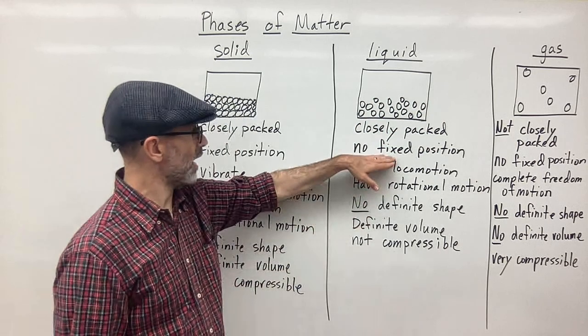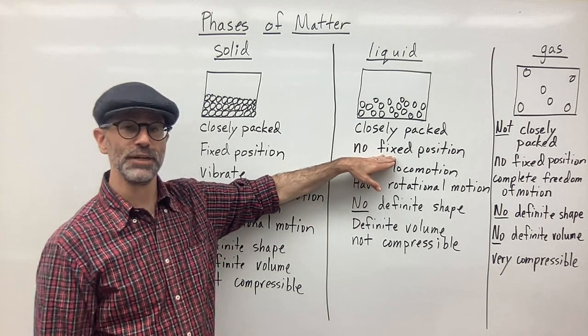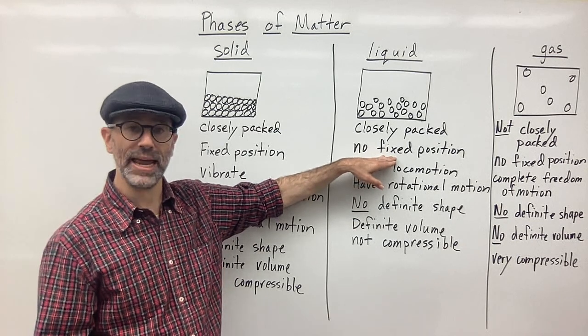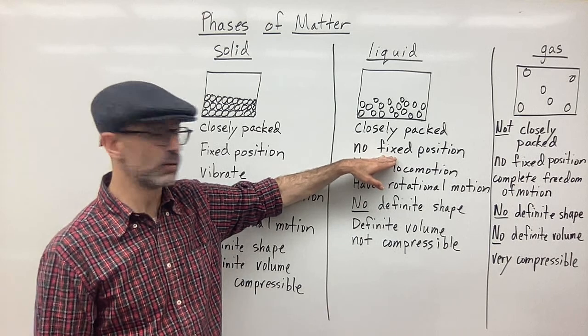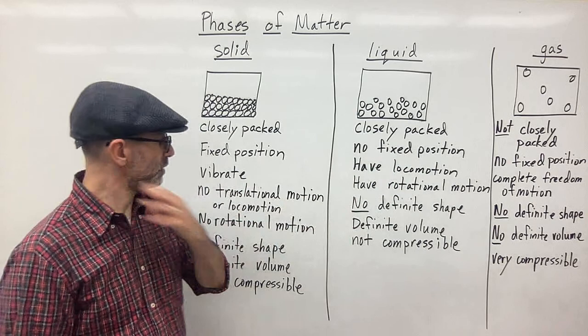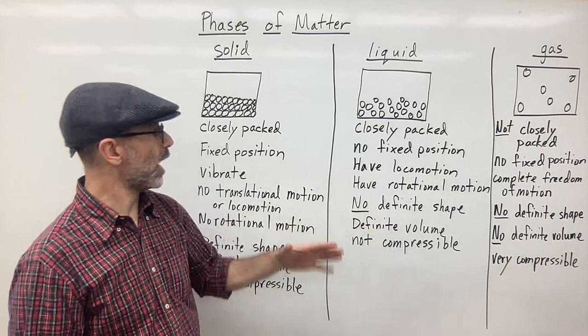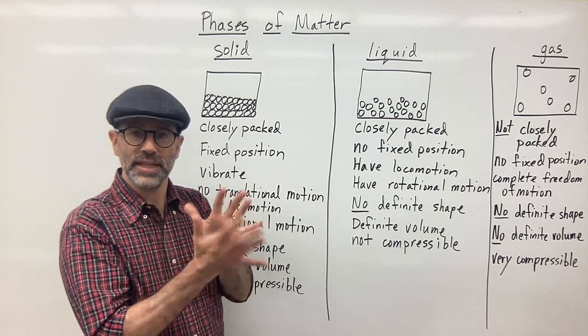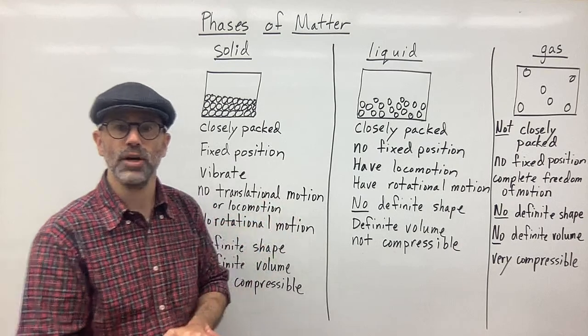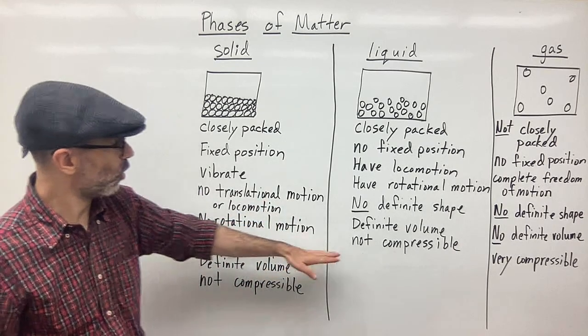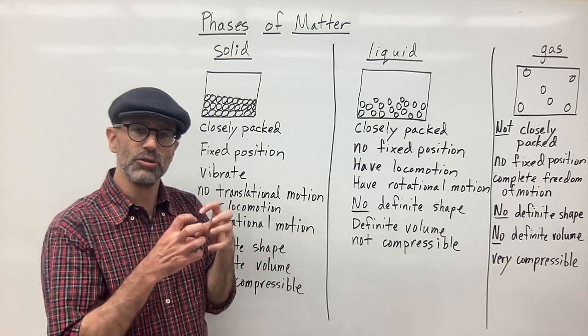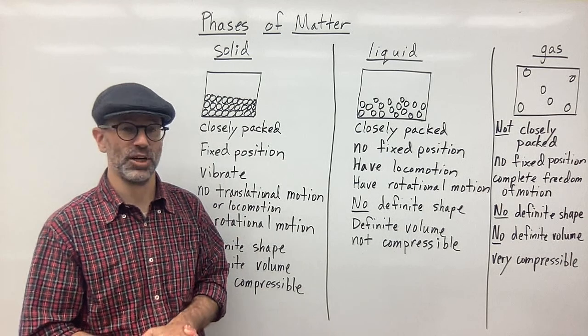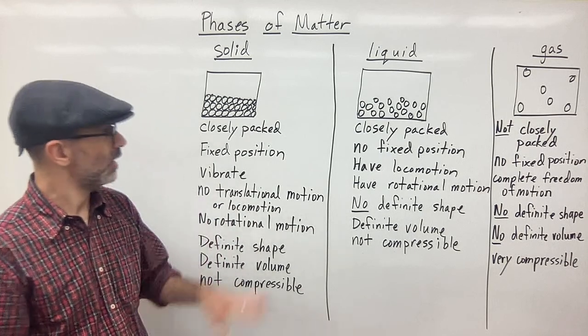Liquids are not going to have a fixed position. If they don't have a fixed position, that means they can change shape. They can move around. So this allows for a change in shape and therefore no definite shape of liquids. I already mentioned locomotion, rotational motion. And again, they have a definite volume. Why? Because they're still closely packed together. They're not really moving away from each other. They're staying very closely packed together, but they are able to move past each other. Therefore, they're not going to be compressible as well. Because the particles are still really close together, practically speaking, it's not really going to be compressible. You're not really going to compress a liquid all that much, if at all.